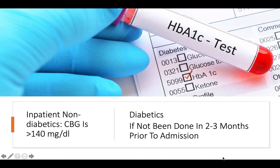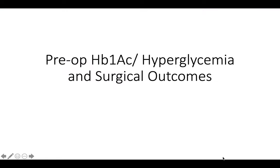Who needs HbA1c testing? Non-diabetic inpatients with CBG above 140 mg/dL should have HbA1c measured. Diabetic inpatients who have not had an HbA1c in the last two to three months before admission should also have it done, as it reveals average blood glucose control over that period.